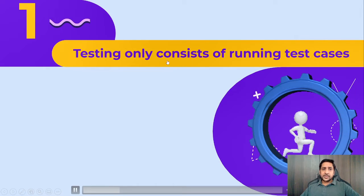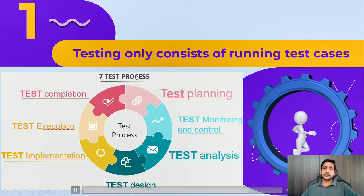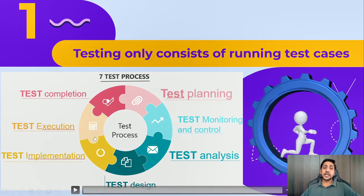The first misconception is that testing only consists of running test cases, which is not correct. Testing actually follows seven processes: test planning, test monitoring and control, test analysis, test design, test implementation, test execution, and test completion. We have to plan, monitor what we have planned, analyze the requirements, design the test cases, implement our test cases, execute them, and then collect the report. So testing does not mean only running test cases.